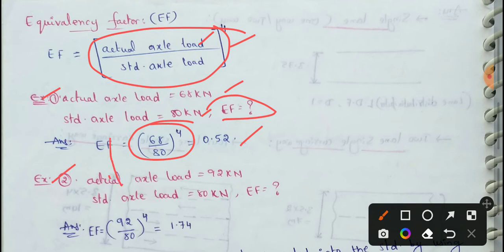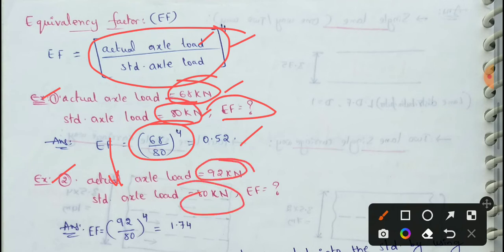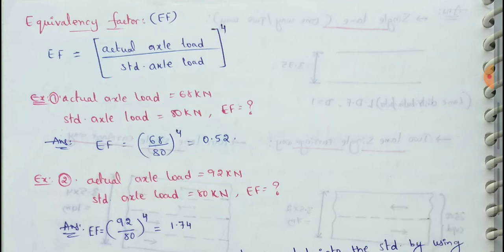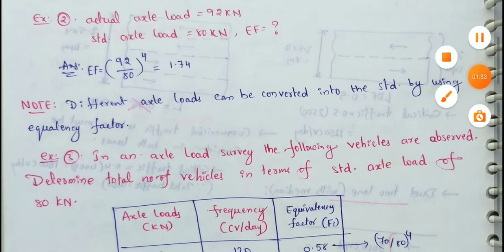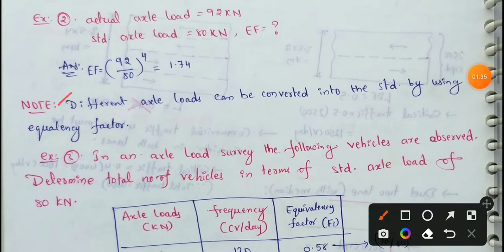Different axial loads can be converted into standard axial load by using the equivalency factor. With the equivalency factor, different axial loads are converted to standard axial loads for pavement design purposes.